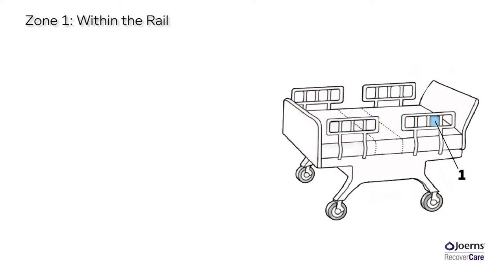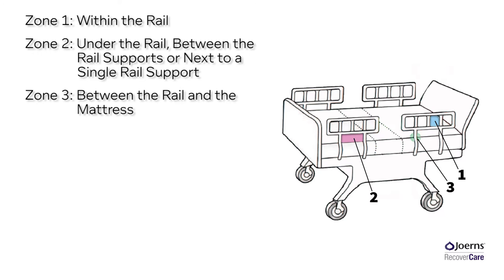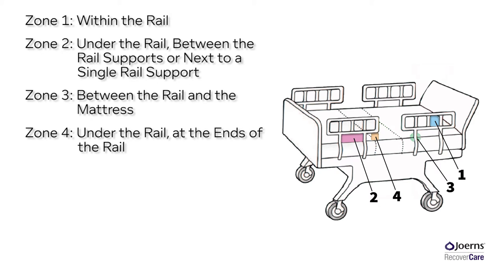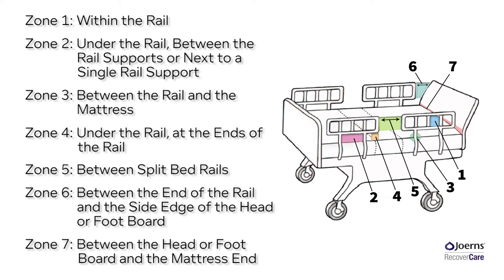Zone 1 – Within the rail. Zone 2 – Under the rail, between the rail supports, or next to a single rail support. Zone 3 – Between the rail and the mattress. Zone 4 – Under the rail, or at the ends of the rail. Zone 5 – Between split bed rails. Zone 6 – Between the end of the rail and the side edge of the head or footboard.